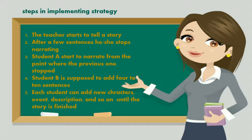When the teacher stops telling the story, the teacher might appoint students to continue the story. The fourth step is Student B is supposed to add 4 to 10 sentences. And the last step is each student can add new characters, descriptions, and so on, until the story is finished.